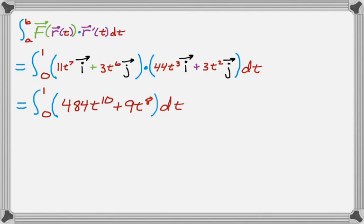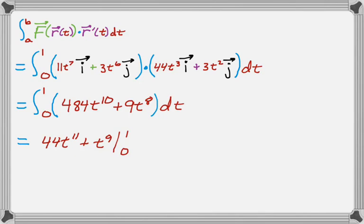Now this is just a simple integral. We apply the reverse power rule — plus 1 and multiply by the reciprocal — which simplifies to 44t¹¹ plus t⁹. We evaluate from 0 to 1. When you plug in 0 you just get zeros, so we end up with 44 plus 1, which is 45.